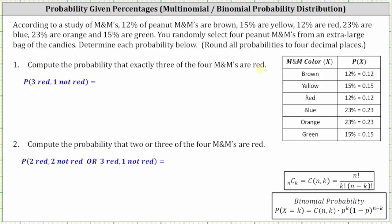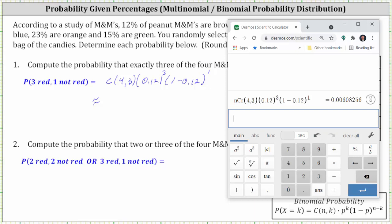For number one, we are asked to compute the probability that exactly three of the four M&Ms are red. Because we are selecting four M&Ms and we want three of them to be red, we begin with four choose three, times the probability of a red M&M raised to the third power, which is 0.12 raised to the third power, times the probability of not red, which is one minus 0.12, raised to the first power. Evaluating to four decimal places, we have 0.0061.